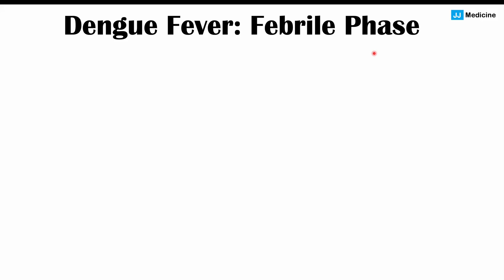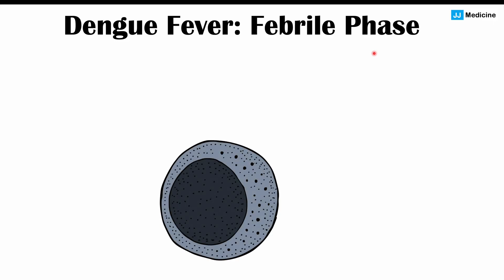Once the prodromal phase has concluded, we can move into the febrile phase — febrile means fever, and that's what we're going to have happen. Before we discuss why that happens, we need to talk about what happens when our cells get infected by viruses, which will help us understand why we get some of the signs and symptoms of dengue fever.